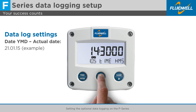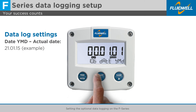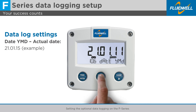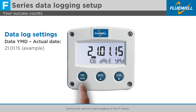Press Select to go to Menu 10.6, Date YMD, to set the actual date in years, months, and days. Press Prog to change the date setting. Use Select and Clear to set your actual date. For this example, 21.01.15 for January 15, 2021. Press Prog to store this setting.